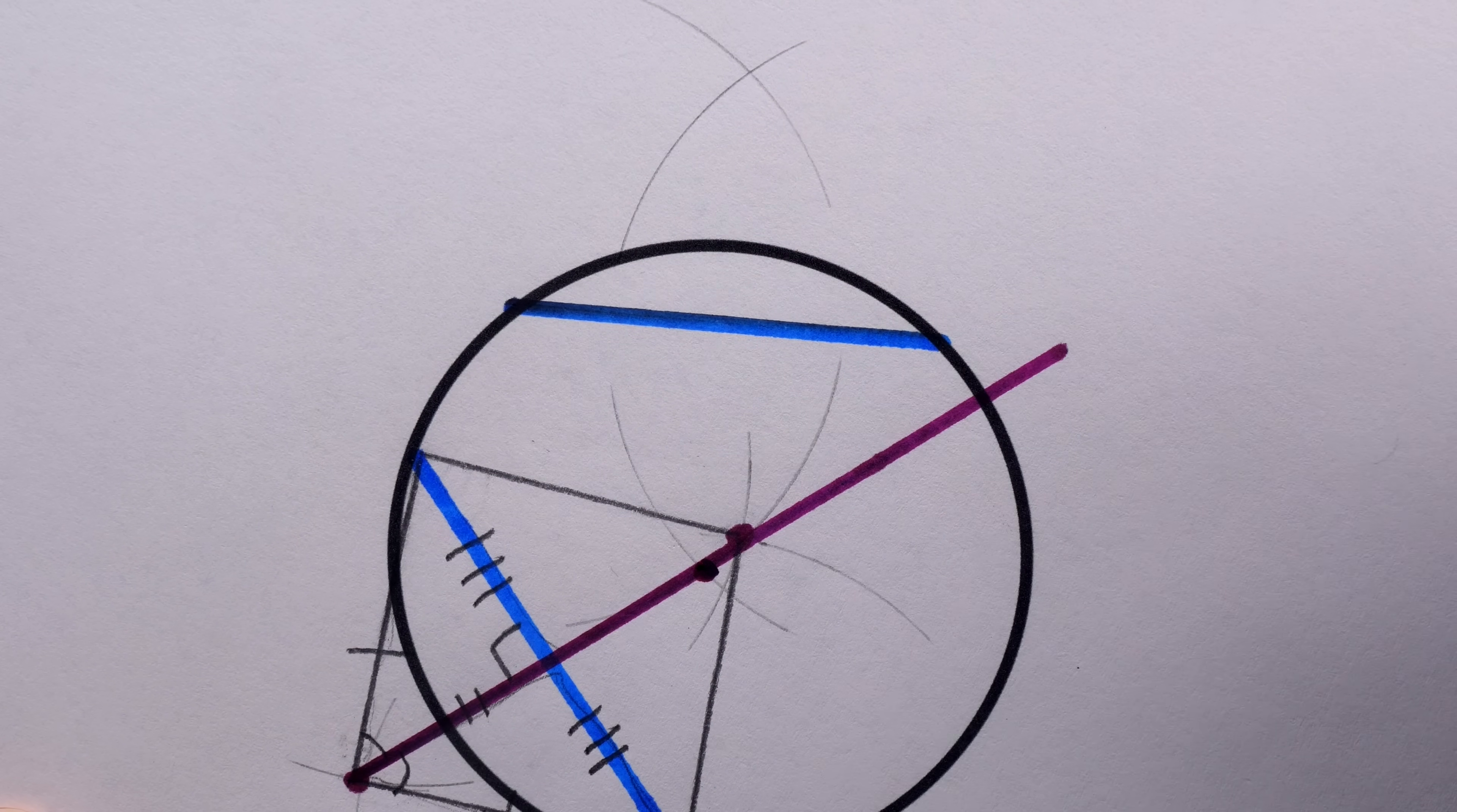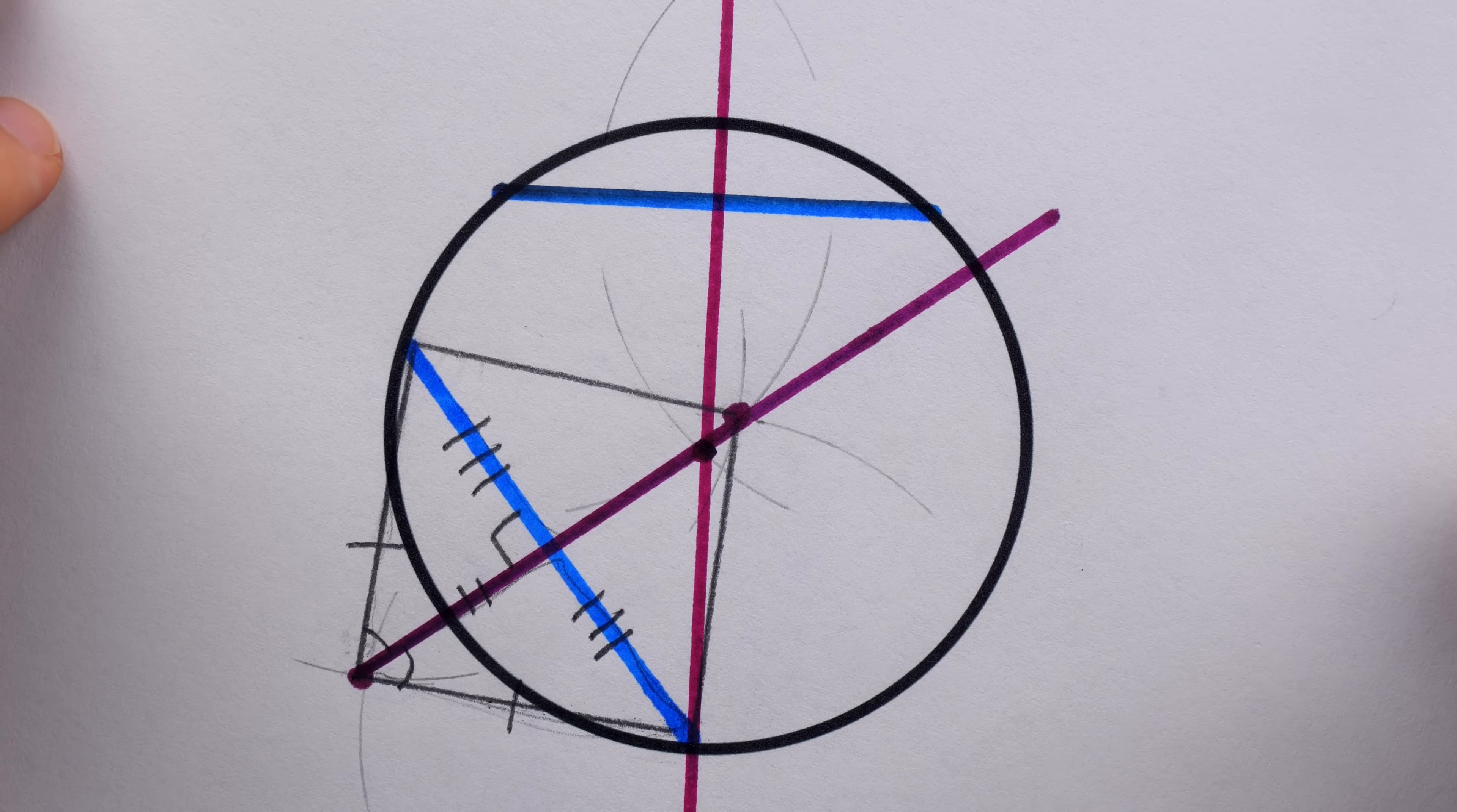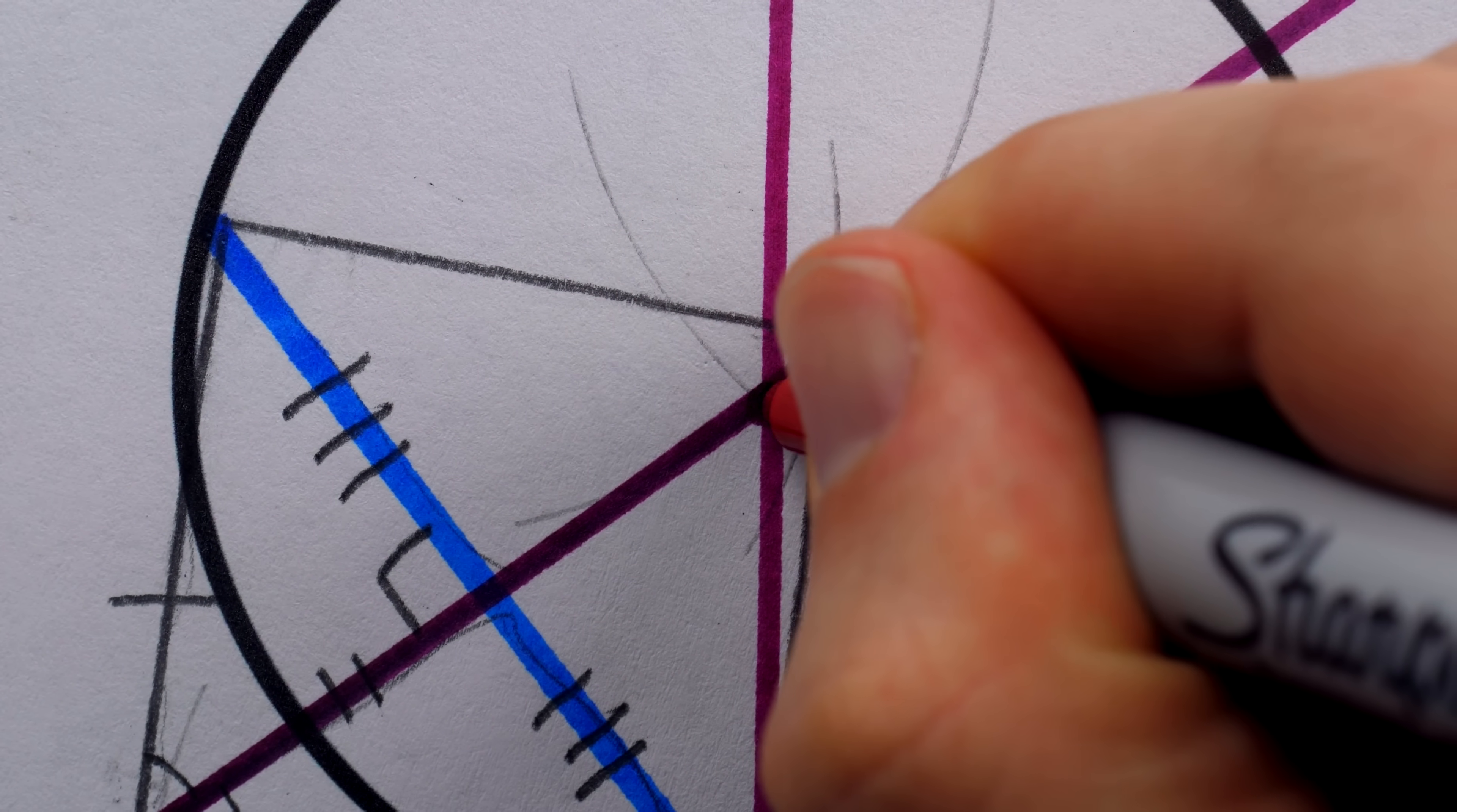So now, if we connect these two points of intersection of the arcs, guaranteed I'm going to get a line that contains a diameter of the circle. And then at last, where it intersects the previous diameter must be the circle's center.